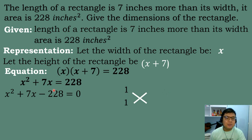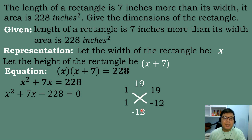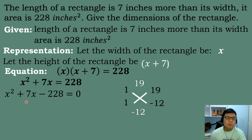Then we will get the factors of negative 228. The factors of negative 228 are 19 times negative 12 — one is negative because positive times negative must be negative. Performing the crisscross method: 1 times negative 12 equals negative 12, and 1 times 19 equals 19. When we add these, we get 19 minus 12 equals 7, which matches the numerical coefficient of our linear term.